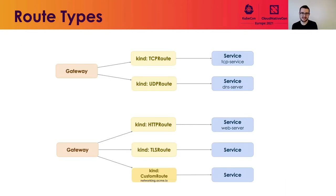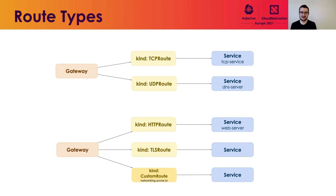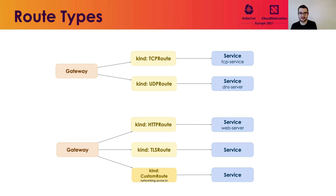A key concept in this API is that of routes. Most of our demos and talk so far have focused on HTTP route, but we have other route types as well: TCP route, UDP route, and TLS route. We've left room open to add additional route types — we envision more route types will probably be added to the core API. In addition, implementations may want to add their own custom route if they have a custom protocol or matching logic that doesn't fit within our existing extension points. We believe this provides a great deal of flexibility with how you route your traffic.